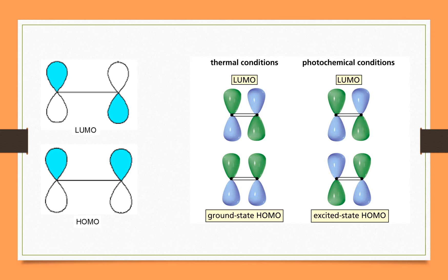Looking at the phase diagrams, in HOMO both positive lobes are on the same side, while in LUMO the positive signs are in opposite phase. In this case, the excited HOMO automatically becomes LUMO. In the ground state, HOMO has positive and negative lobes arranged accordingly.